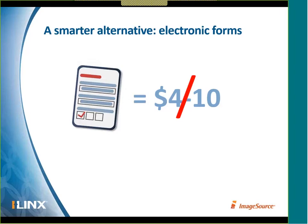E-forms are more than just an electronic representation of your paper form. When a paper form comes in with inaccurate or missing information, it can be a very time-consuming and costly effort to get that corrected. E-forms provides mechanisms like database lookups, pick lists, and even GPS data collection and other powerful technologies to validate inbound information at the time of collection, ensuring accuracy and completeness before it's submitted to you.